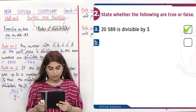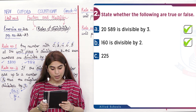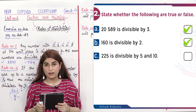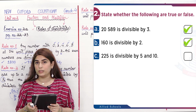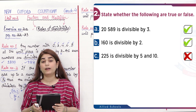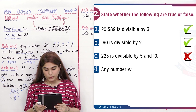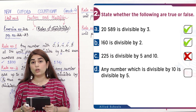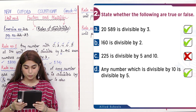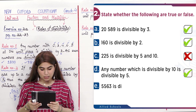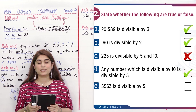Statement (b): 160 is divisible by 2 — True. Statement (c): 225 is divisible by 5 and 10 — it ends in 5, so it is only divisible by 5, not by 10. False — it is only divisible by 5. Statement (d): Any number divisible by 10 is also divisible by 5 — True. Statement (e): 5563 is divisible by 5 — the unit digit is 3, not 5 or 0, so this is False.